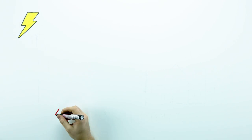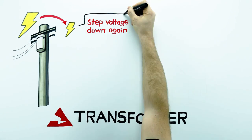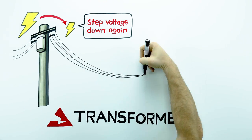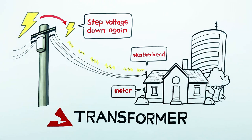However, the voltage is still too high for our personal use. A smaller transformer near our property is required to step the voltage down once again. From here, it heads to the meter, from which is distributed into the wires inside our homes and businesses.